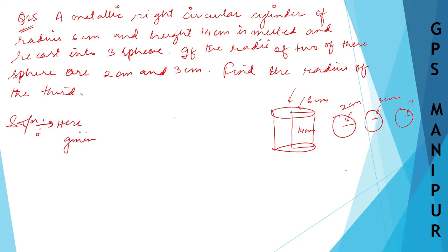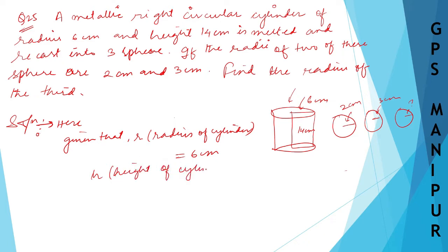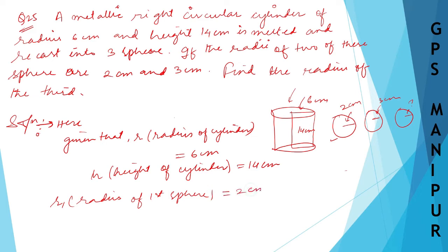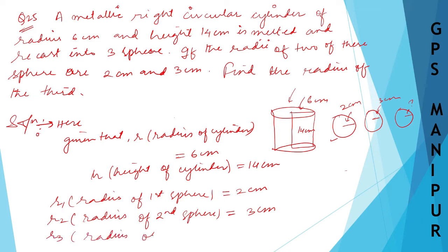Given: r, the radius of the cylinder, is 6 cm. h, the height of the cylinder, is 14 cm. r1, the radius of the first sphere, is 2 cm. r2, the radius of the second sphere, is 3 cm. r3, the radius of the third sphere, is unknown — we need to find it.